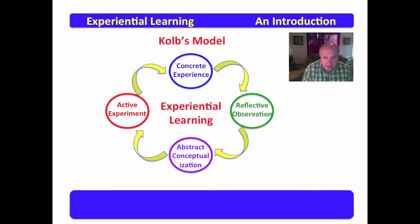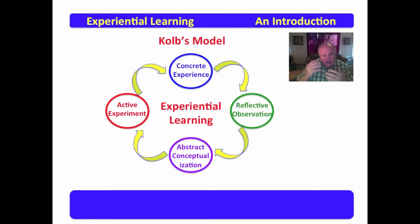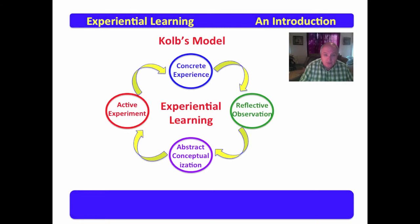What we see from this model is that the experience occurs and is reflected upon. That reflection generates abstract opinions being formed about the experiences — values or judgments are made. Based upon those judgments, more experiment is done, and that experiment then impacts continued concrete experience.